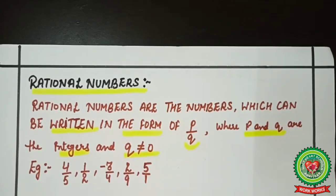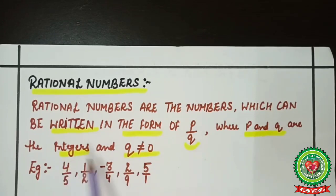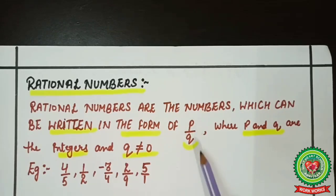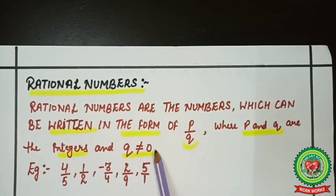First, what are rational numbers? Rational numbers are numbers which can be written in the form of p upon q, where p and q are integers and q is not equal to zero. That means rational numbers can be expressed in any form like p/q, a/b, or m/n, where both the numerator and denominator are integers and the denominator can never be zero.